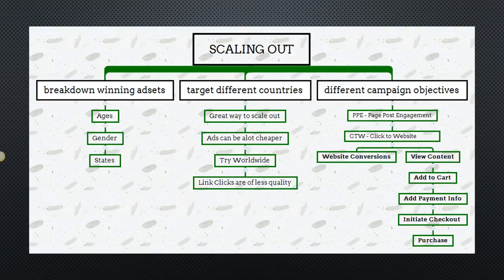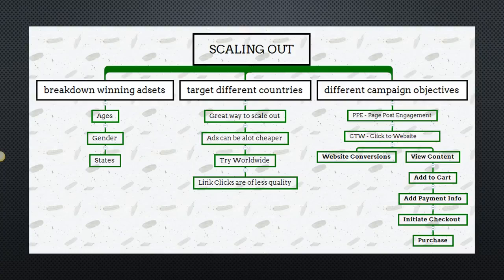Another way to scale out is by targeting different campaign objectives. For example, if you're running a PPE (Page Post Engagement) ad, scale out into different campaign types like click-to-website or website conversion ads. With website conversion ads, you can optimize for view content, add to cart, add payment info, initiate checkout, and purchase — all great ways to hit your audience from different angles and see what works.